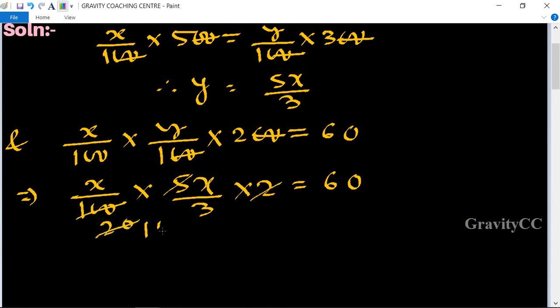Therefore, x² = 60 × 3 × 10, which equals 1800.